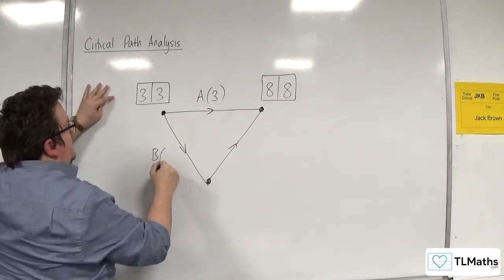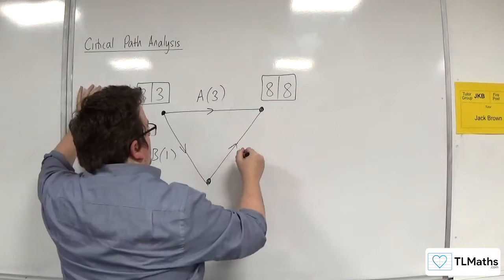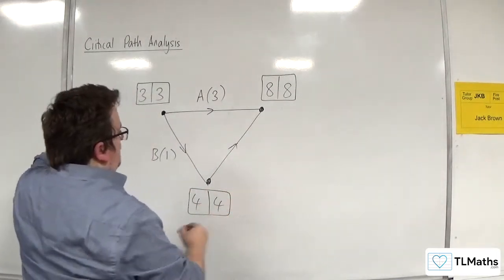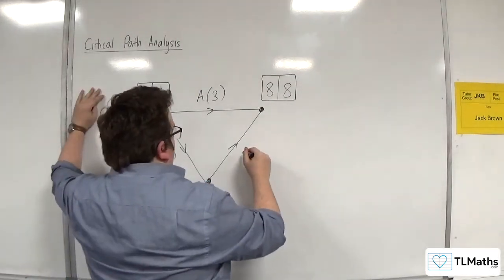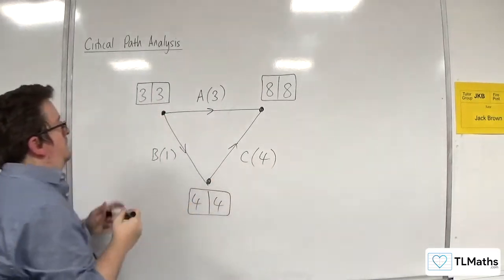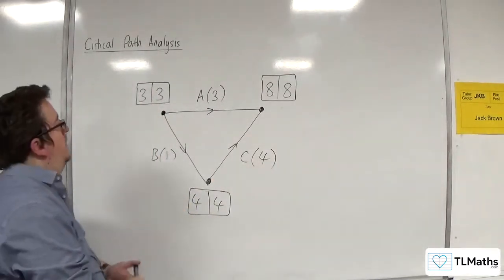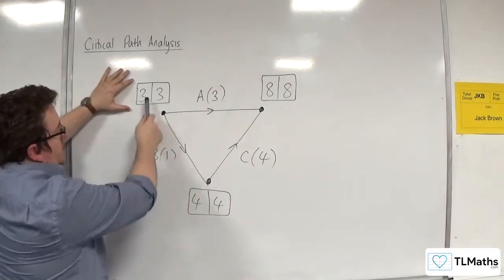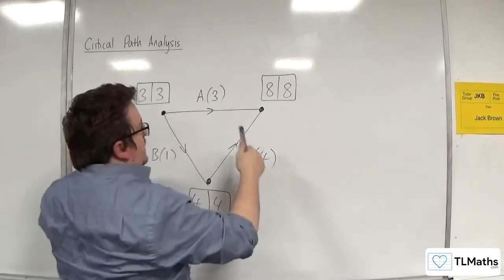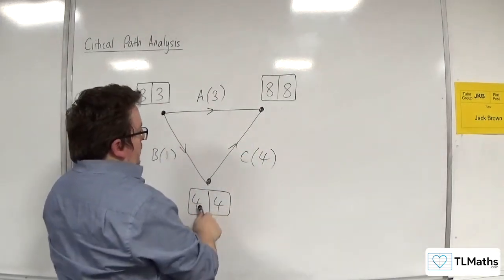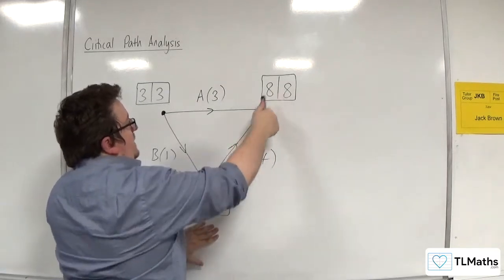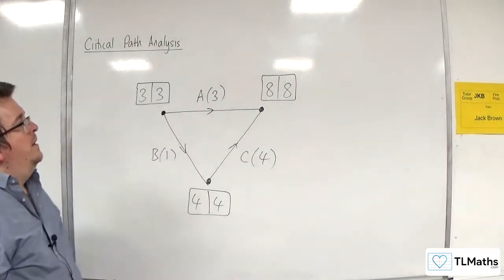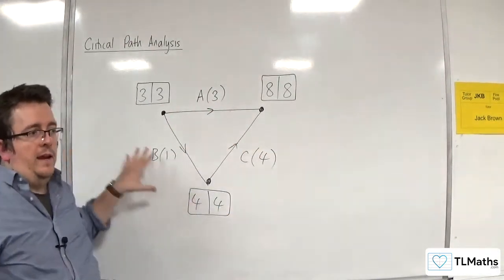So let's say that's B and that's 1 and I put the box here as 4, 4 and this could then be C of duration 4, for example. So B is critical because 3 plus 1 is 4 and we've got 3, 3, 4, 4. So C is critical because we've got 4, 4, 8, 8 and 4 plus 4 is 8. But A here is not critical. Now, that is something that can happen in an activity network.